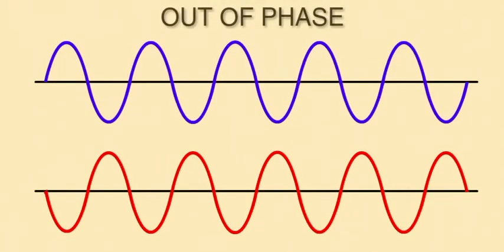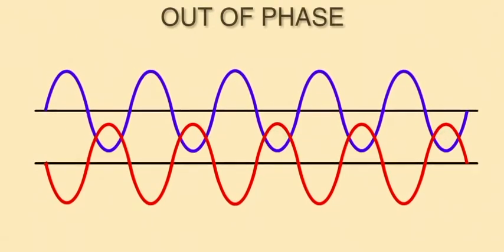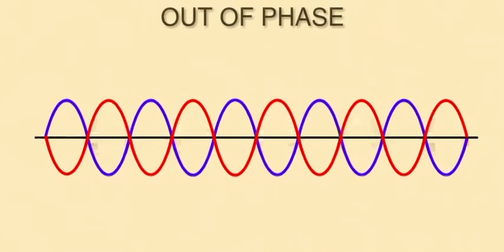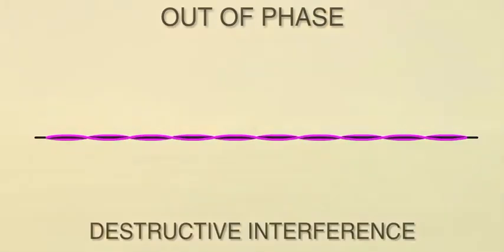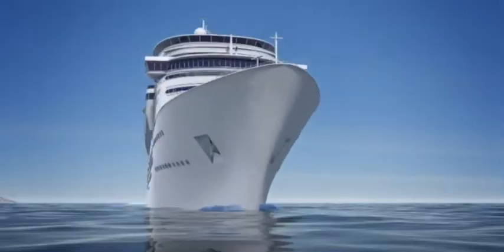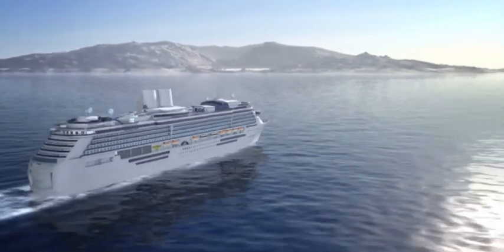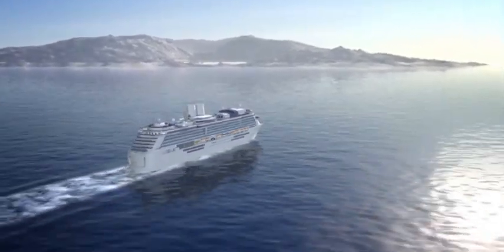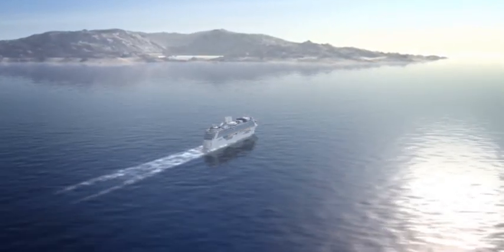When two waves are completely out of alignment with one another — that is, the peaks, the maximum wave amplitude, and the troughs, the minimum wave amplitude, do not line up — the amplitude of the two waves is less than the original amplitude. They are said to be out of phase, and the result is destructive interference. Think of a cruise ship: you'd expect it to produce a huge wake as it travels, but because of new technology, a second wave out of phase with the first is created, which cancels out the first wave. This results in almost no wake behind the ship — an example of destructive interference.